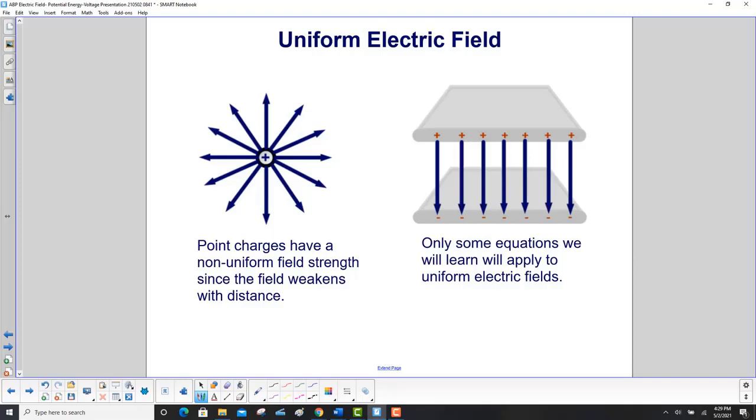Point charges have a non-uniform field strength. See the electric field arrows? They get farther away from each other the farther out you go. Right here they're kind of close. Here they spread out. So the field weakens with distance. Only some equations we will learn will apply to uniform electric fields. See how these are all the same distance apart and the same length? That means the electric field is constant.